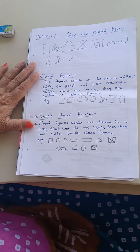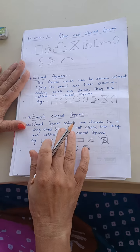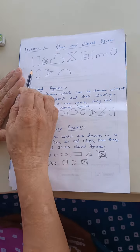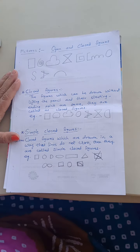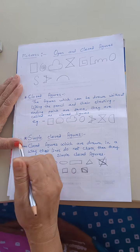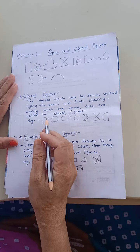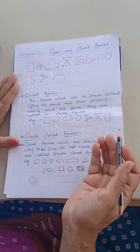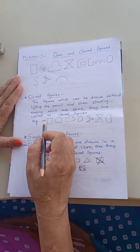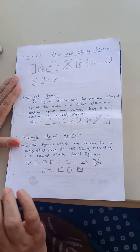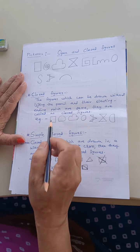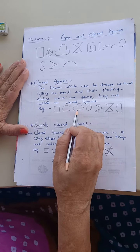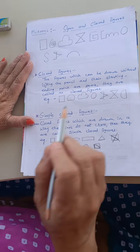Let us move on to the next subtopic, and that is open and closed figures. Now you can see here there are open and closed figures both. A figure which is closed from all the sides is called a closed figure. The starting and the ending point in a closed figure are the same. You can see these figures — there are no openings here, they are closed from all the sides.